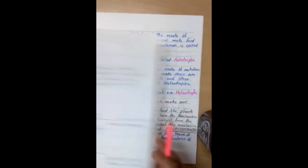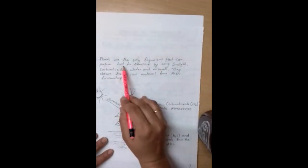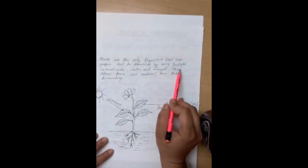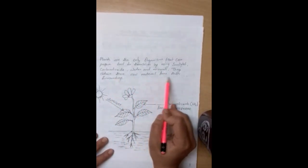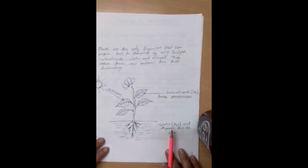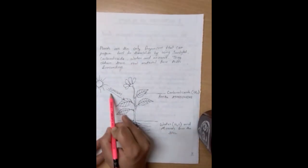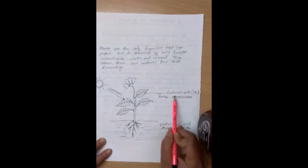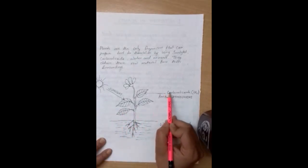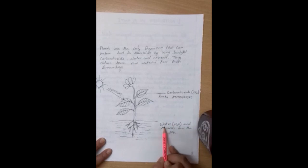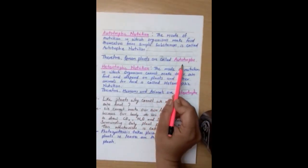Here, I can say that plants are the only organism that can prepare food for themselves by using sunlight, carbon dioxide, water and minerals. They obtain these raw materials from their surroundings. Like you can see in the diagram, the plant is getting sunlight from the sun. It is getting carbon dioxide from the atmosphere. It is getting water and minerals from the soil. So, in the presence of sunlight, with the help of carbon dioxide and water and mineral, which acts as the raw material, the plant is able to prepare its own food. That's why green plants are called autotrophs.